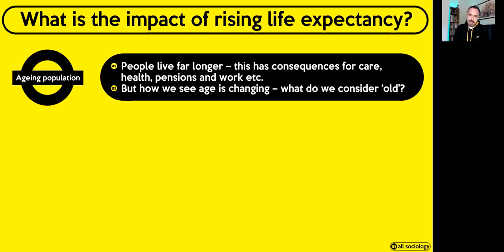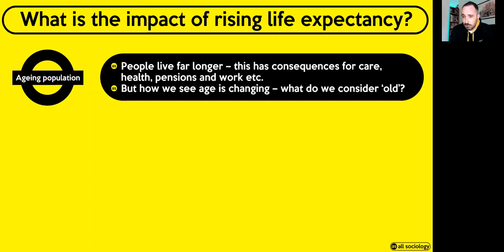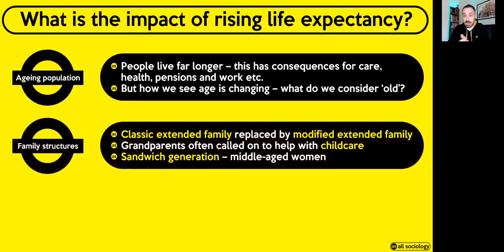We can also see how age is changing and what we might consider to be old might be very different to what we used to consider old. When we think of people who are around age 60, there are film stars and pop stars who still look really good and are living a really active, healthy life. Someone who might be 60 today is not necessarily considered old in the way we used to consider it. Basically, the way we see age is different — because people are getting older, you don't really get old until you get much, much older.